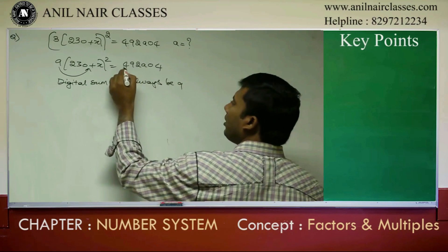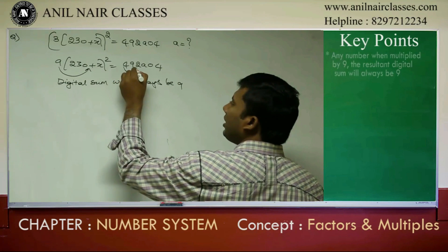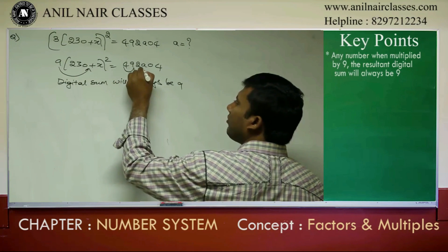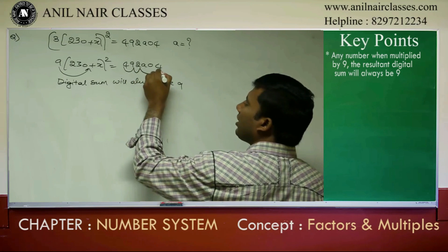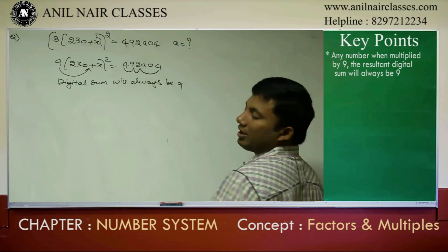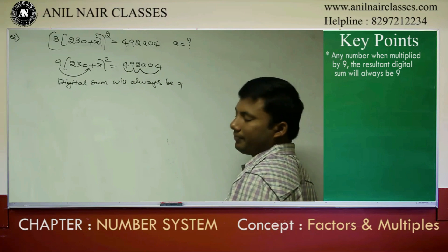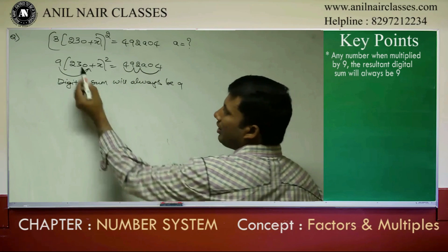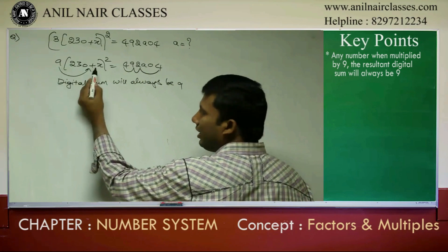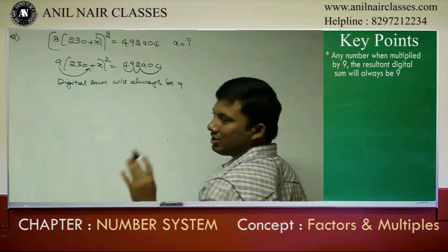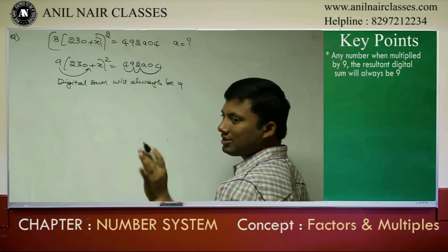For example: 4 plus 9 is 13, then 15, then 19 — 9 into any number, the digital sum is always 9.